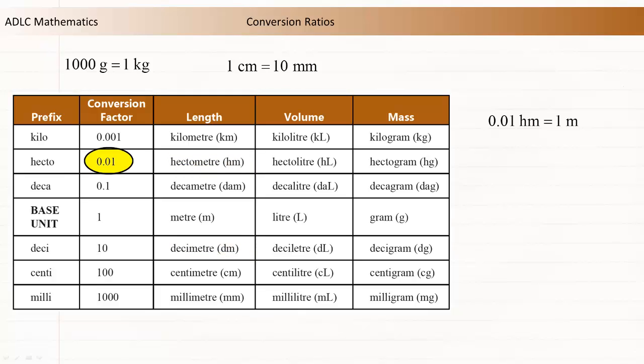In this example, 0.01 hectometres are equal to 1 metre, and 10 decimetres are equal to 1 metre. Because both values are equal to 1 metre, they must be equal to each other. This means that 0.01 hectometres is equal to 10 decimetres.